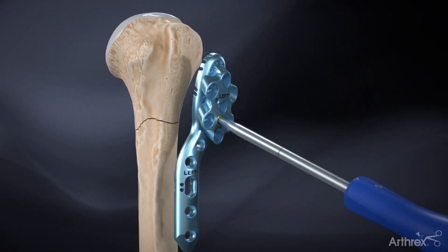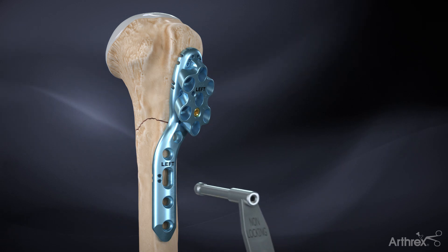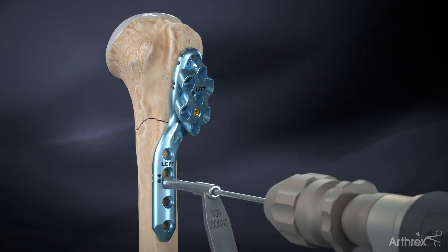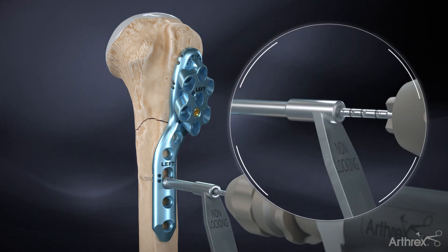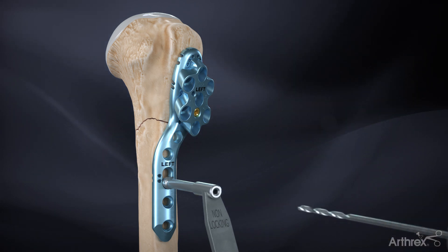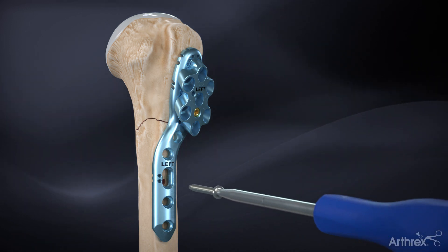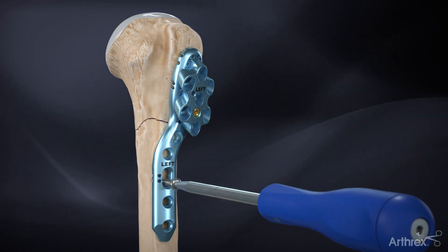Begin the procedure by positioning the plate on the bone with the alignment guide attached. Using the 2.5 millimeter multiple drill guide, drill bicortically through the slotted hole with a 2.5 millimeter calibrated drill bit, using the laser markings on the drill to determine screw length. Insert a non-locking screw through the hole using the T15 hex driver and handle.